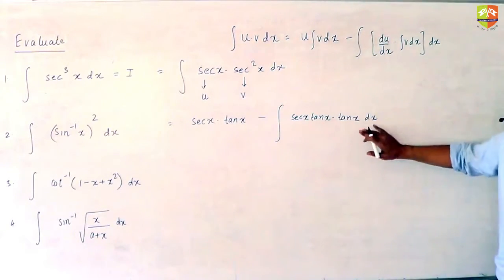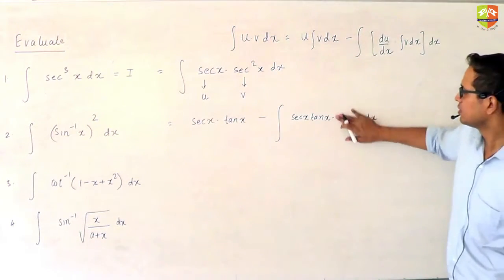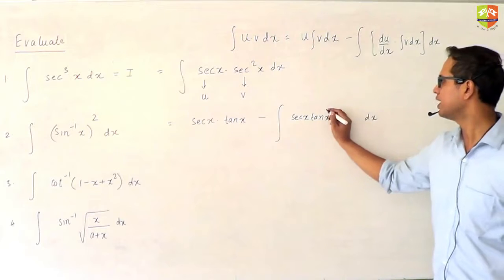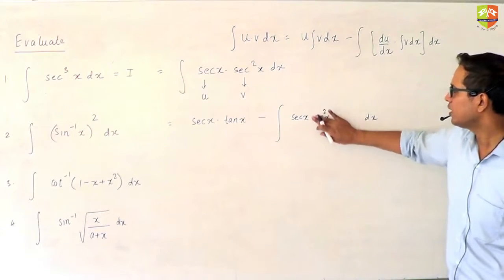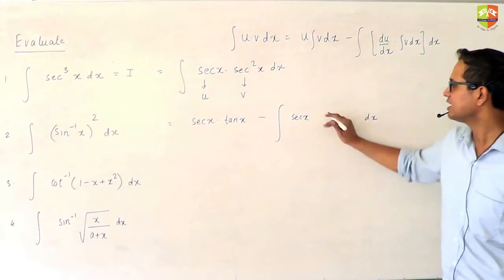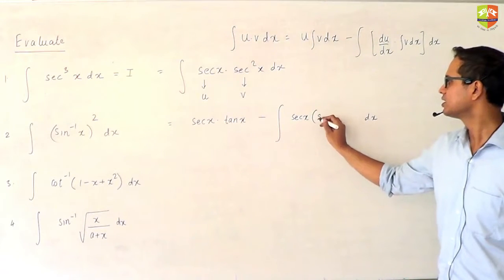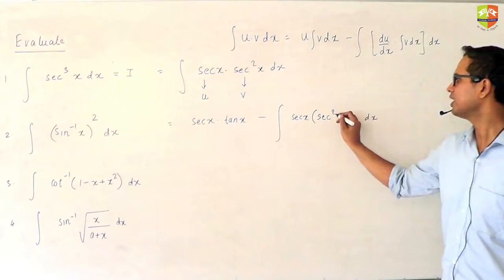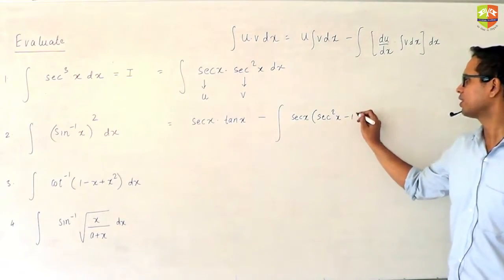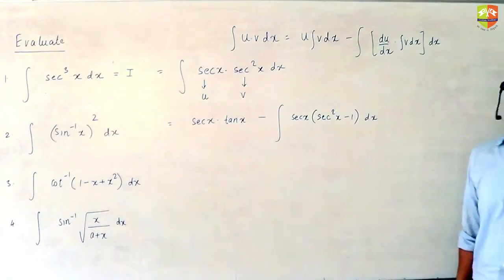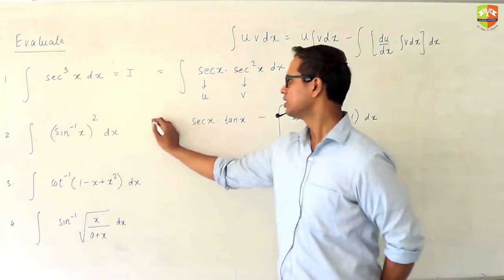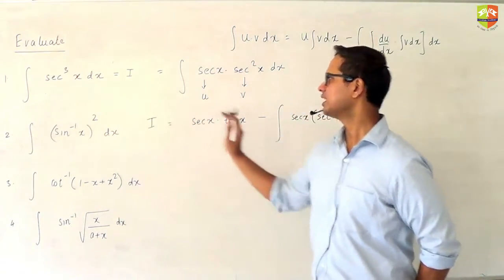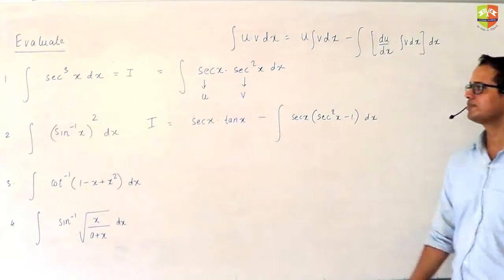Tan x into tan x becomes tan²x, and tan²x I can write as sec²x minus 1. Is this step clear so far?